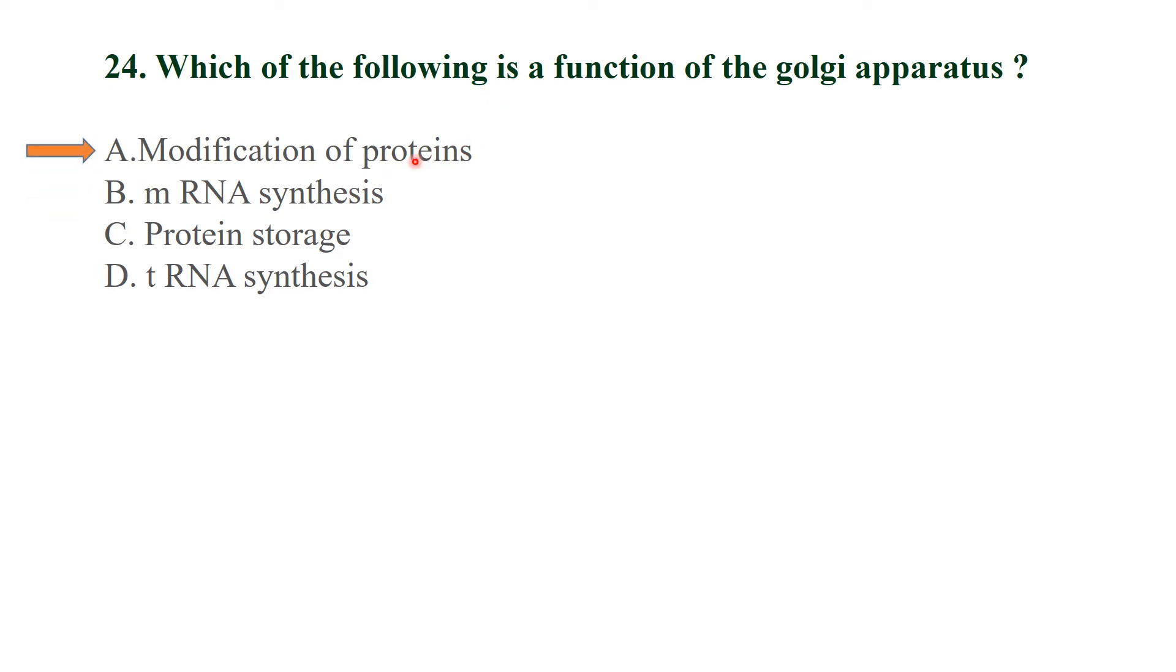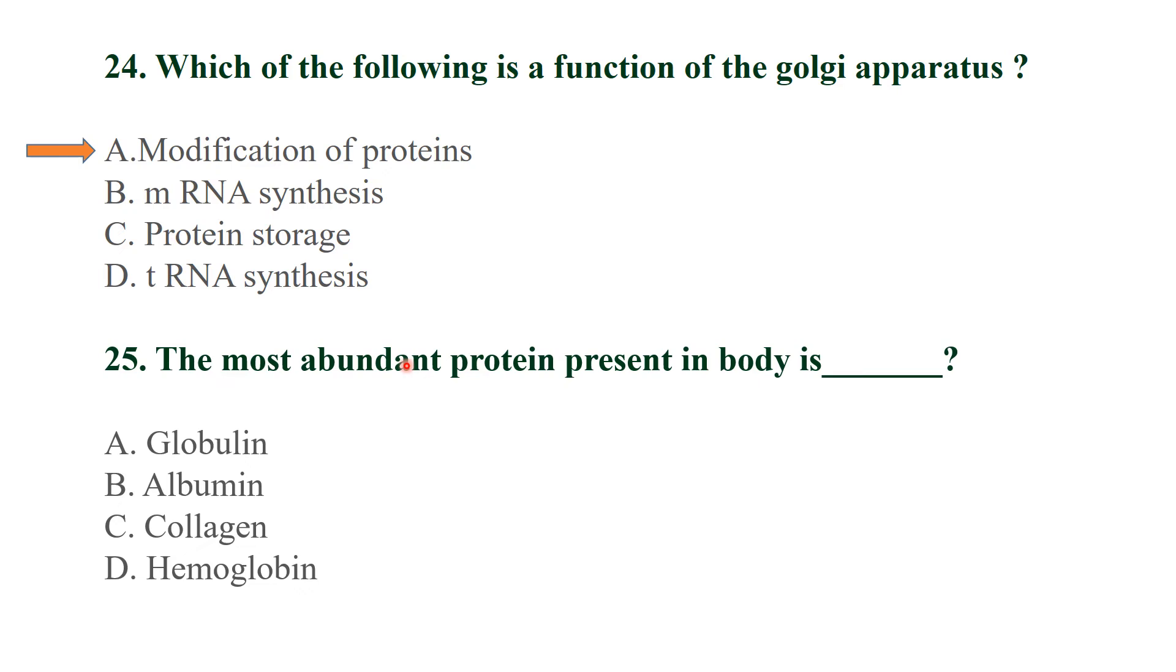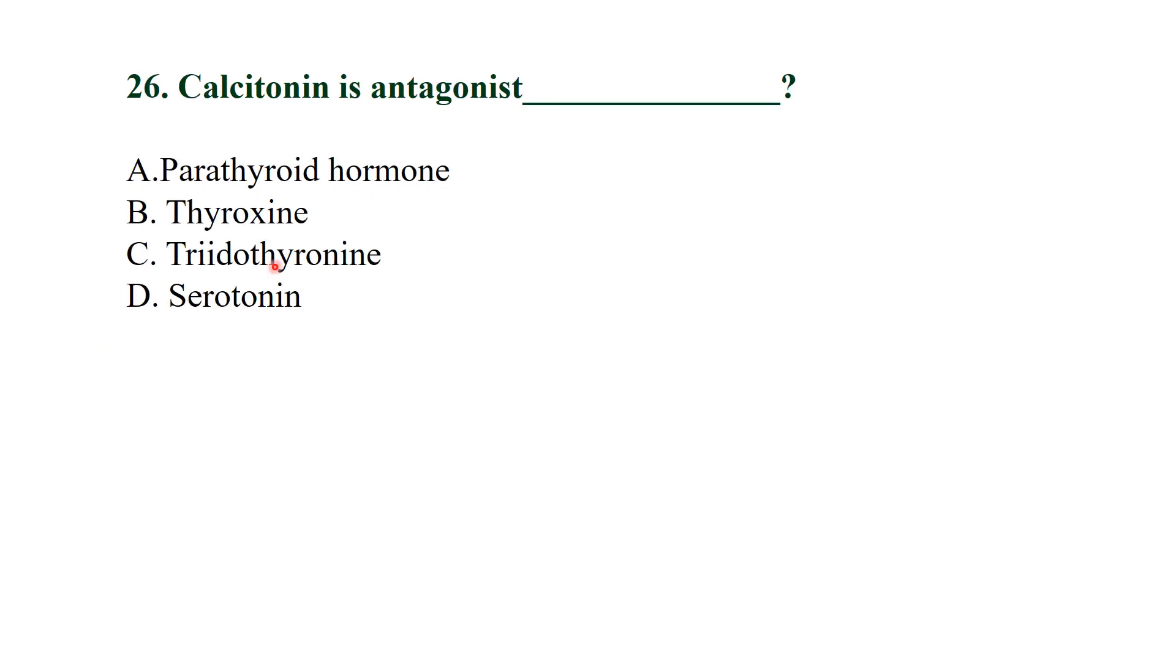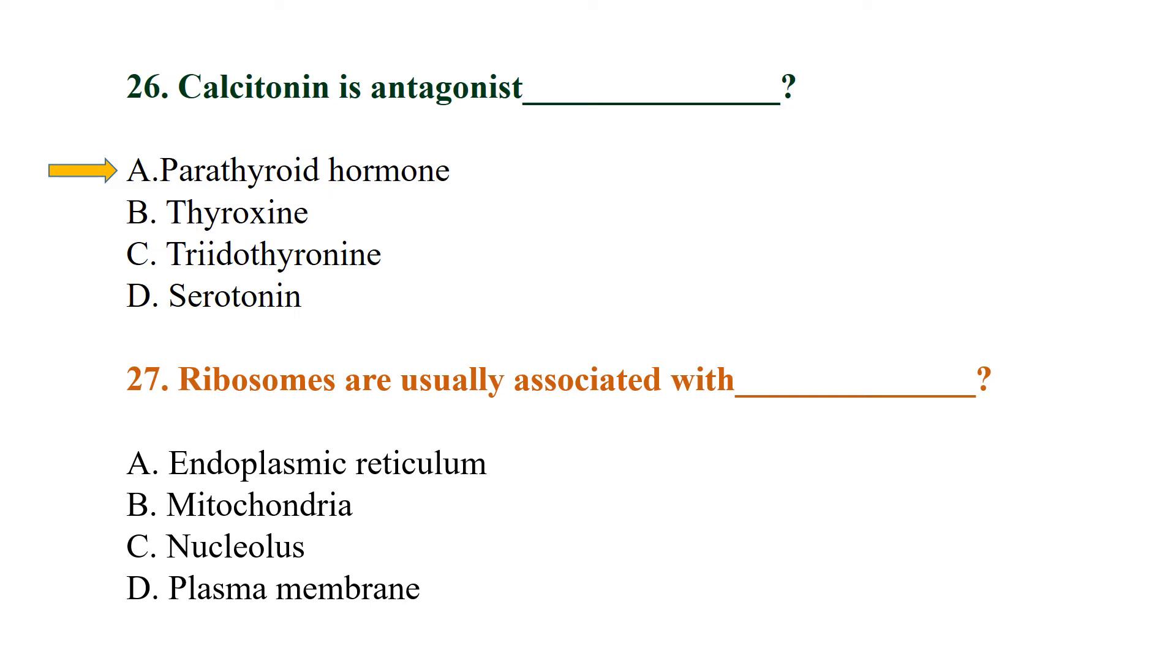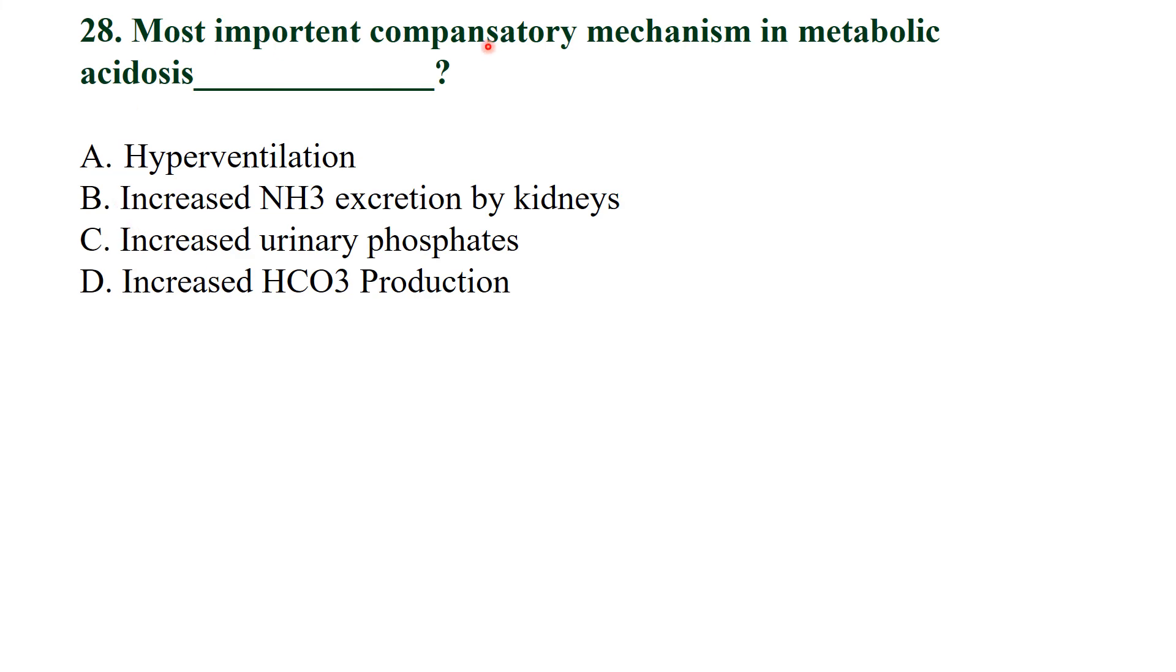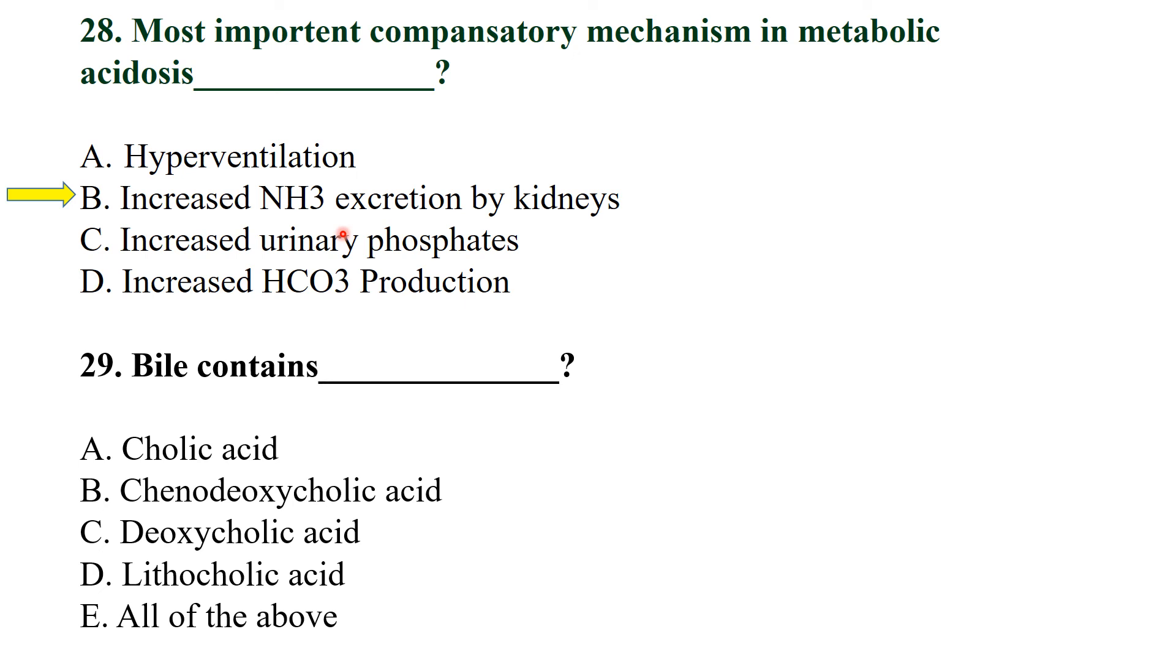The most important protein present in human body is collagen, the most abundant protein in the human body. Calcitonin is antagonist of parathyroid hormone. Ribosomes usually associated with endoplasmic reticulum are called rough endoplasmic reticulum. The most important compensatory mechanism in metabolic acidosis is increased ammonia excretion by kidney. Bile contains all of the above: cholic acid and chenodeoxycholic acid.